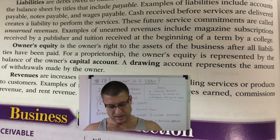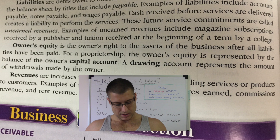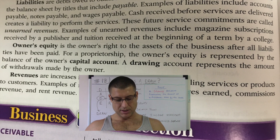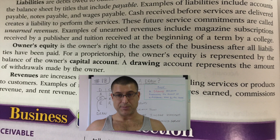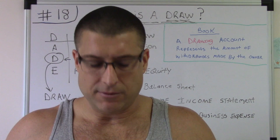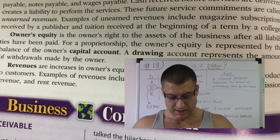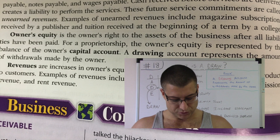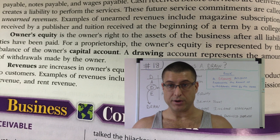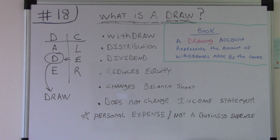From the book: owner's equity is the owner's right to the assets of the business after all liabilities have been paid. For a proprietorship, the owner's equity is represented by the balance of the owner's capital account. We're dealing with equity here. The next sentence is: a drawing account represents the amount of withdrawals made by the owner.